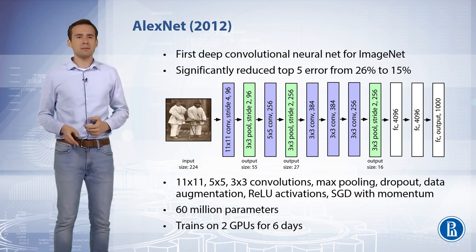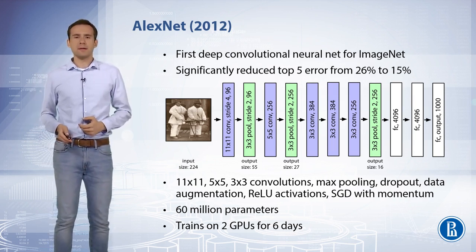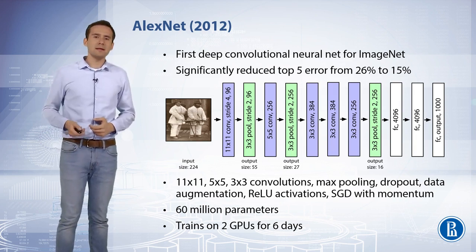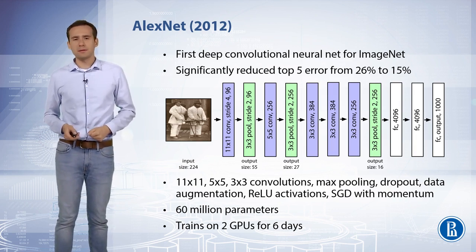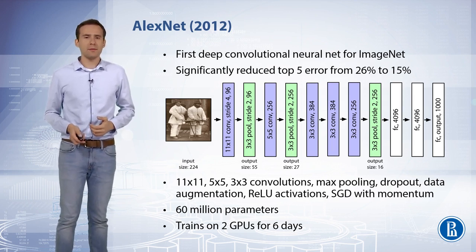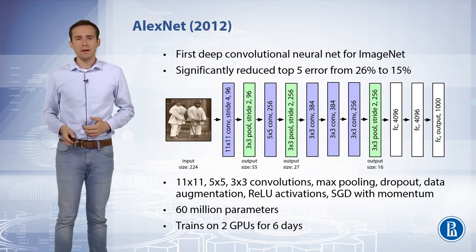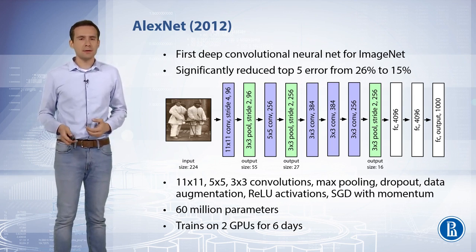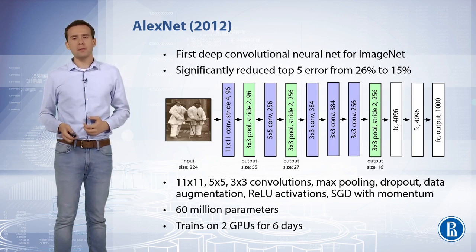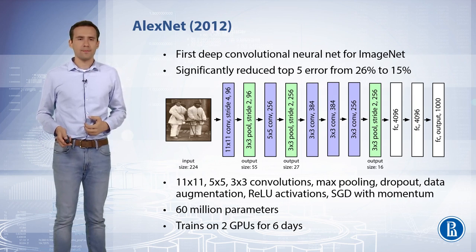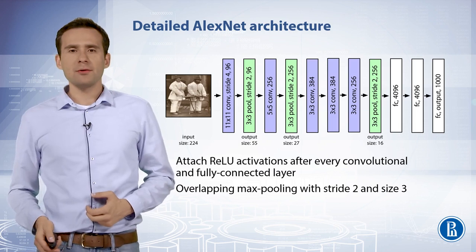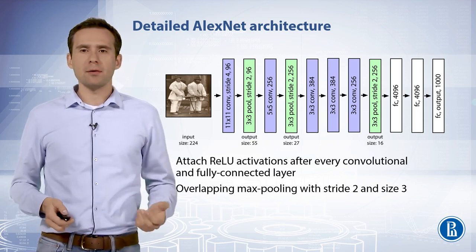Internal representations generated by AlexNet were studied and utilized as a basis for large-scale image retrieval. Despite many CNN improvements proposed during subsequent years, the architectural principles underlying AlexNet remain the foundation for CNNs up until now. AlexNet architecture can be viewed as a deeper and much larger network, nevertheless similar in design to the older LeNet-5, following the trend set by that older model.